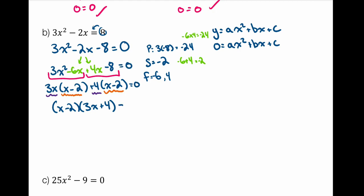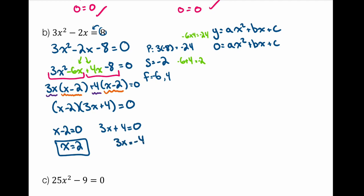Since x minus 2 is a common factor, factoring it out gives x minus 2 times 3x plus 4 equals zero. Setting each factor to zero: x minus 2 equals zero gives x equals 2; 3x plus 4 equals zero gives 3x equals negative 4, divide by 3, x equals negative four over three. So those are my two x-intercepts or solutions to this quadratic equation.